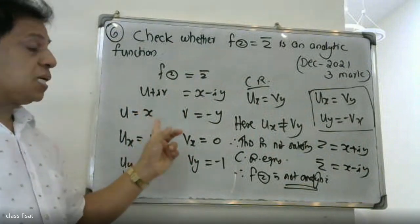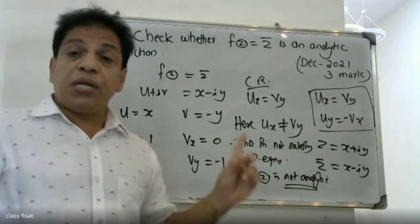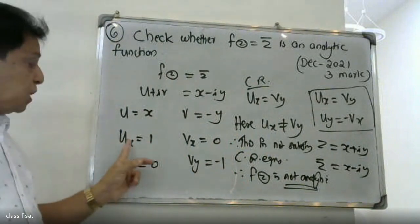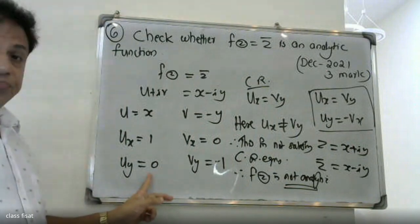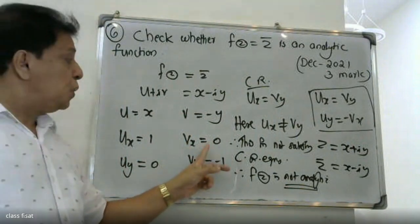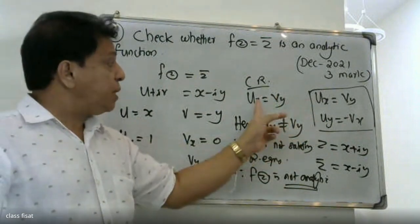Then taking partial derivatives: x with respect to x gives 1, y with respect to y gives the value, x with respect to the other variable, and checking the Cauchy-Riemann equations.